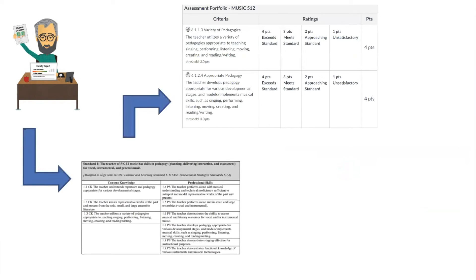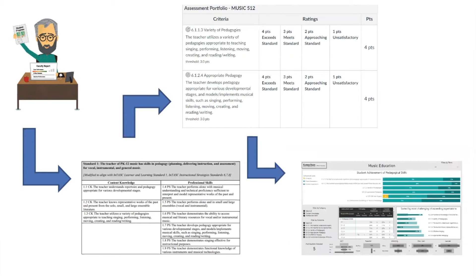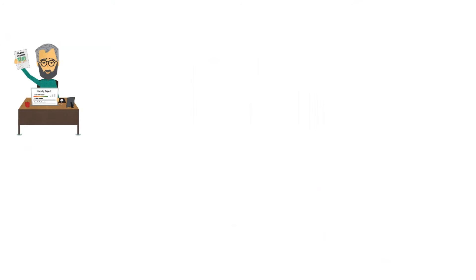For a quick recap: we now have data that started as a student learning outcome, refined into measurable items, and now becomes visualized to determine the extent of student learning. These data allow us to view the music education program from various perspectives and make informed decisions from the program level down to specific instruction within courses. We can look at the curriculum regarding content, scope, and sequence as a result of student success or struggles.